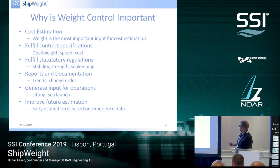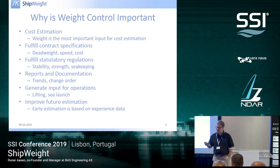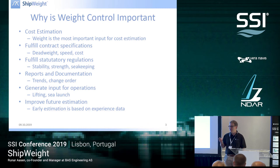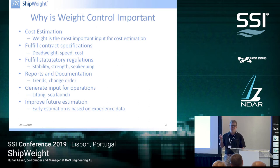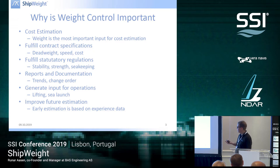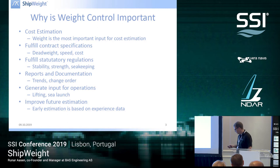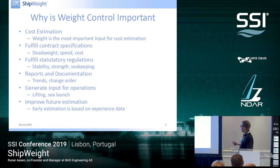Another reason weight control is important is to fulfill contract specifications with your clients. Either the contract contains a direct number for weight and CG that you have to fulfill, or there are parameters directly related to weight and CG — most notably deadweight and speed, maybe a combination. So it's important to fulfill contract specifications.